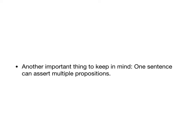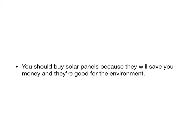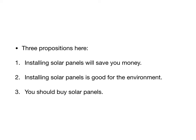Another important thing to keep in mind is that one sentence can assert multiple propositions — in fact, they often do. Let's revisit our pet sentence from a few lectures ago: 'You should buy solar panels because they will save you money and they're good for the environment.' That's one sentence, but there are actually three different propositions: installing solar panels will save you money; installing solar panels is good for the environment; and you should buy them. The first two propositions are supposed to support the third — it's an argument, and there are three propositions in this one sentence.